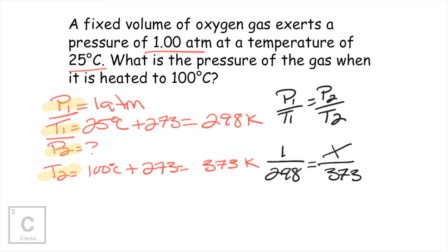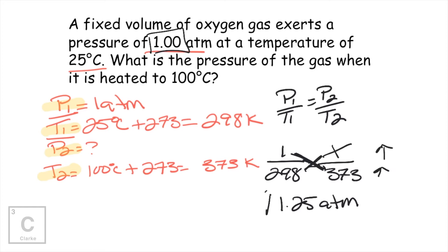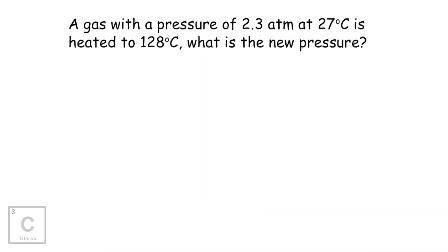Our temperature increased, so we expect our pressure to increase. We're going to cross-multiply and divide: 373 times 1 divided by 298 equals — keeping three significant figures — 1.25 atmospheres. So our temperature increased and our pressure also increased. Let's look at one more math problem. A gas with a pressure of 2.3 atmospheres at 27 degrees Celsius is heated to 128 degrees Celsius. What is the new pressure?